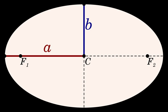For the special case of a circle, the semi-major axis is the radius. The length of the semi-major axis a of an ellipse is related to the semi-minor axis's length b through the eccentricity e.